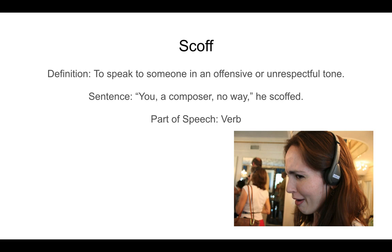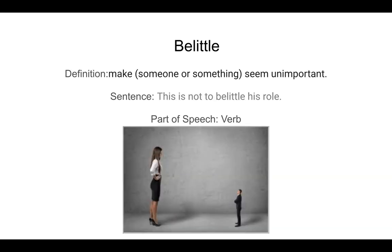The next word is belittle, spelled B-E-L-I-T-T-L-E. Belittle means to make someone or something seem unimportant. A sentence for belittle: this is not to belittle his role. Part of speech is a verb. In the picture, a woman thinks she's important and is making the other person seem tiny and unimportant, as if she's the most important one.